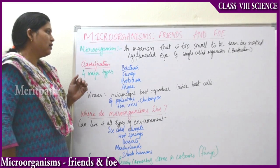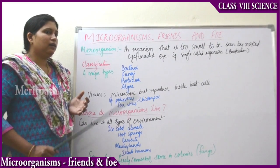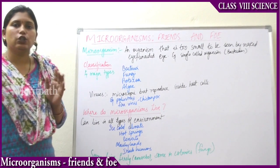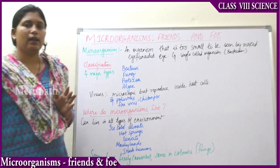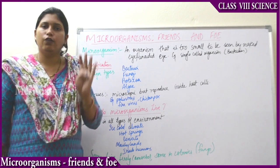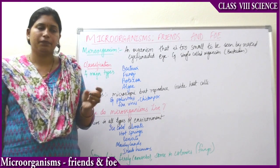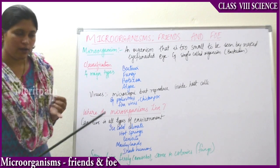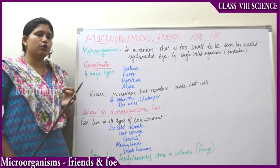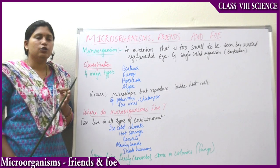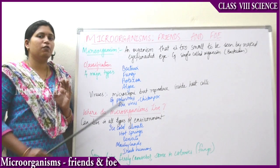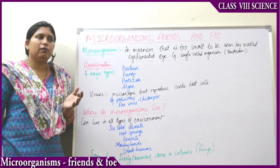What are the types of microorganisms? Broadly, they are divided into four groups: bacteria, fungi, protozoa, and algae. These are the four major types of microorganisms.